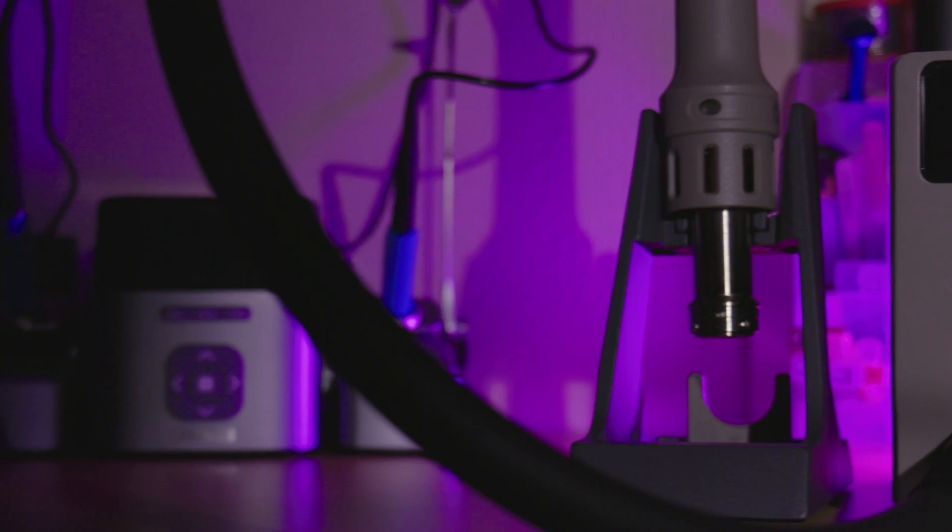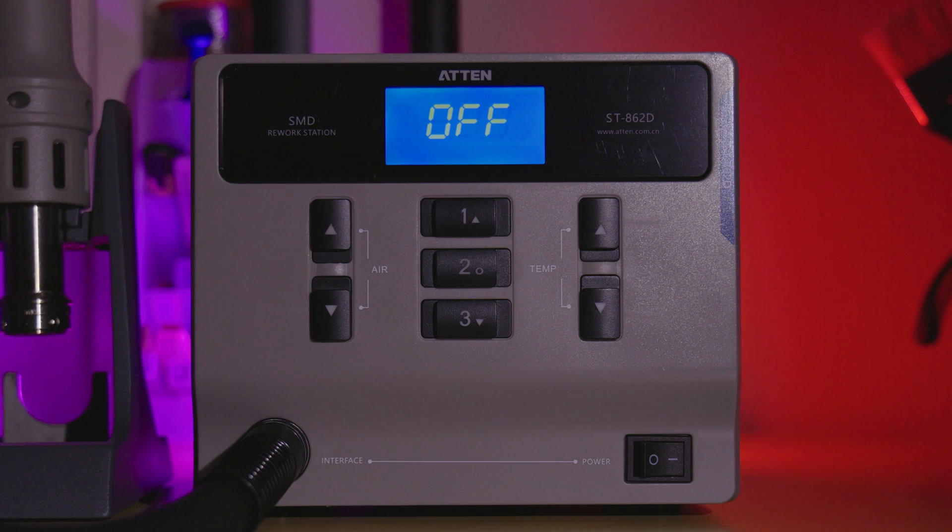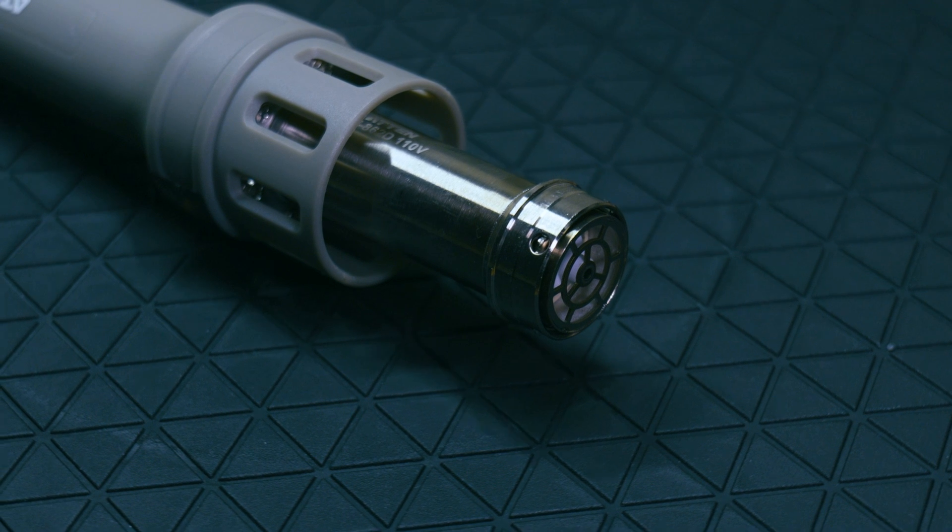What's going on guys? I'm back again with another tool review video. This time we're taking a look at the ATEN ST862D, a professional class hot air station with a rated heater power of 1000 watts.